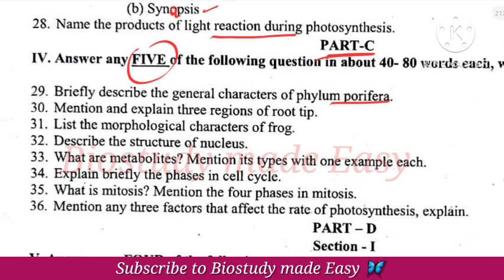Poriferous characters and three regions of root tip. Morphological characters of root, structure of nucleus, and types of metabolites — primary metabolites and secondary metabolites.